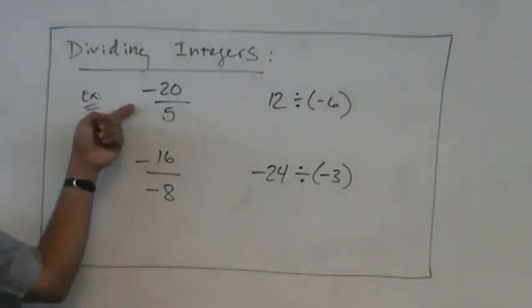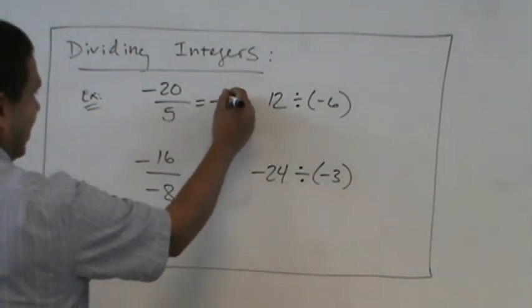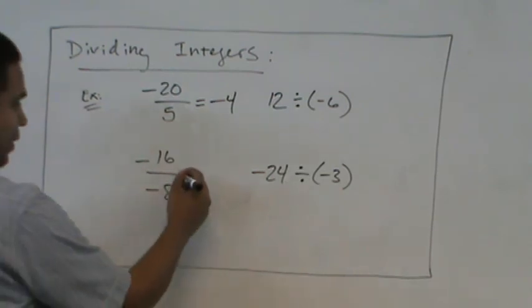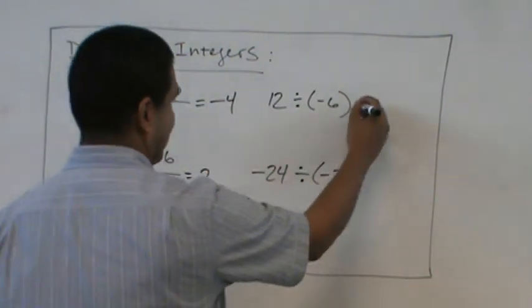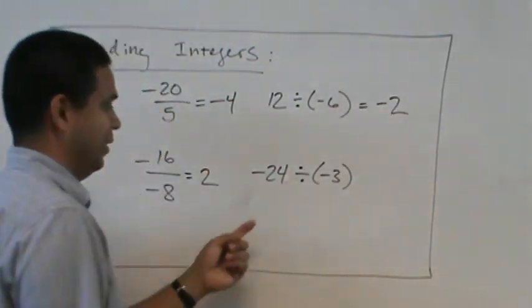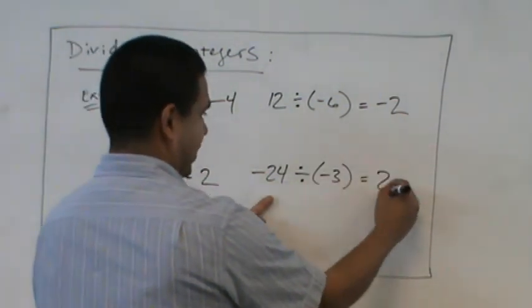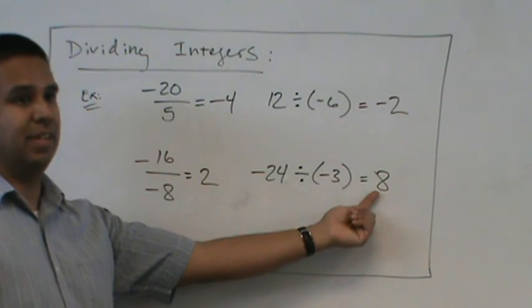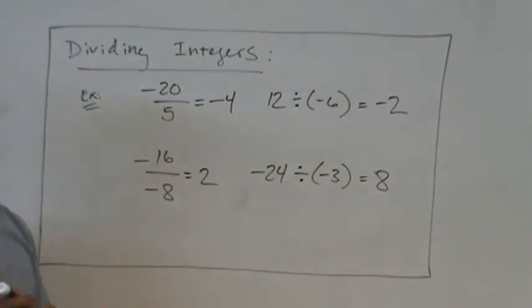What would this one be? Negative four. What would this one be? Positive two. This one? Negative two. Eight. Positive eight. Negative with negative makes it positive. Make sure you know these rules.